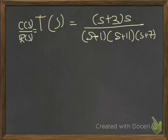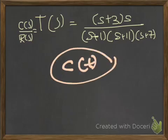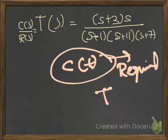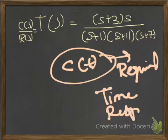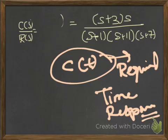All you need to do is write down C(s) divided by R(s) equal to the transfer function. C(t) is your required time response. Looking at the above transfer function, we have C(s) equal to (s + 3) · s divided by (s + 1)(s + 11)(s + 7).